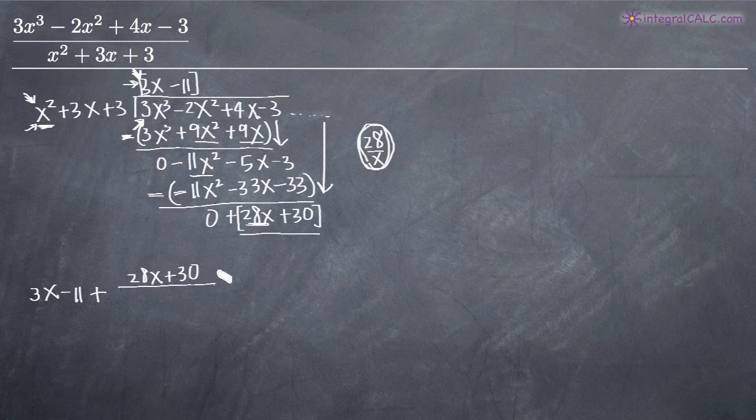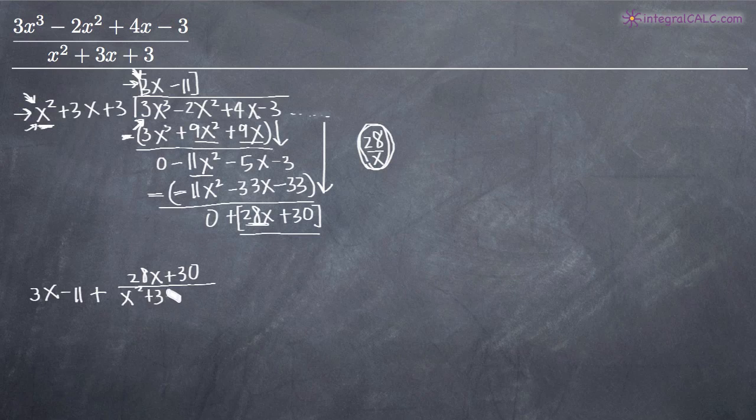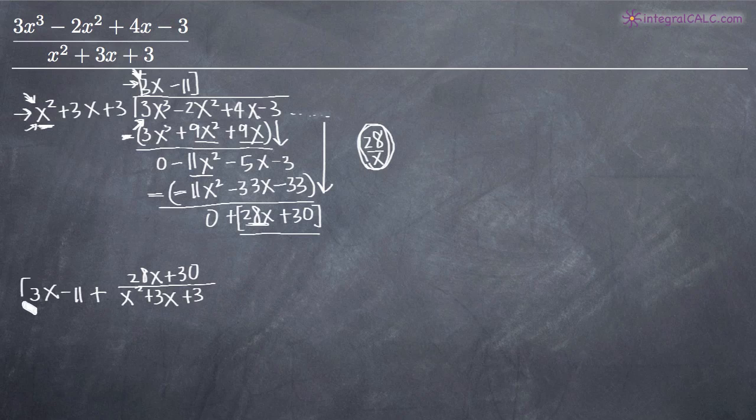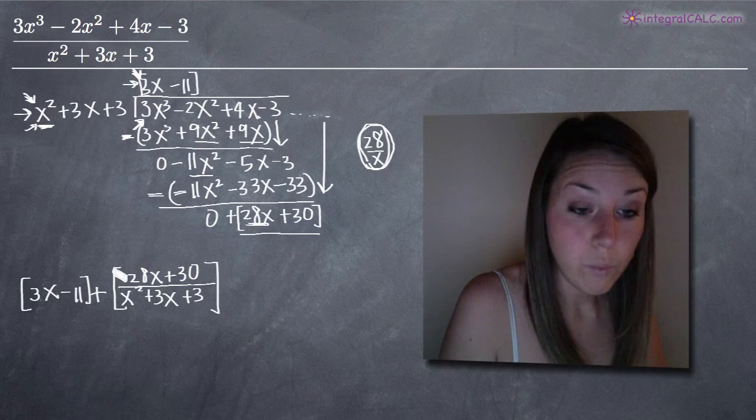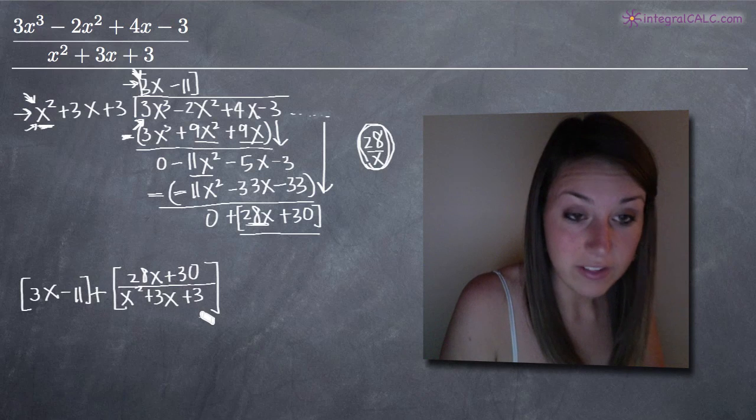The remainder is divided by the original denominator: x² + 3x + 3. The first part is from the top, and the second part is the remainder. This is our final answer.